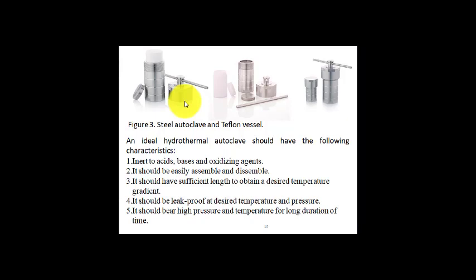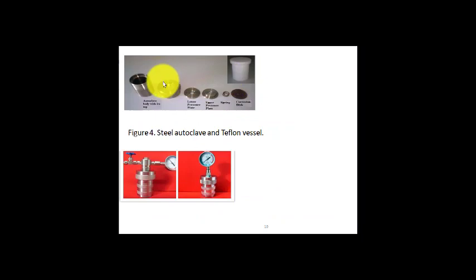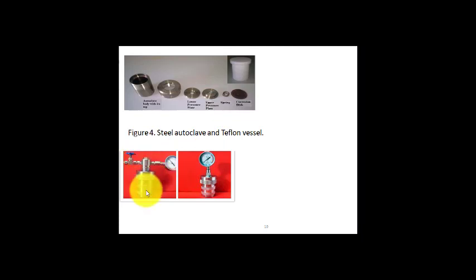An ideal hydrothermal autoclave should have the following characteristics: it should be inert to acids, bases, and oxidizing reagents; easily assembled and disassembled (i.e., easily opened and closed); have sufficient length to obtain a desired temperature gradient; be leak-proof; and have high pressure and temperature bearing capacity. Autoclaves can also be equipped with a pressure meter to give information about the pressure inside, and a valve for controlling the solvent or gas inserted.